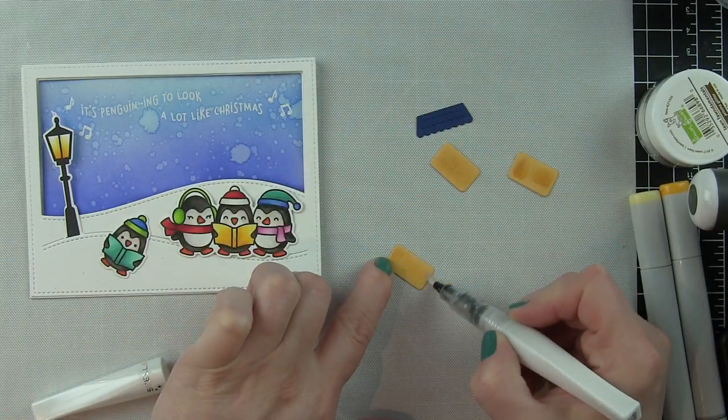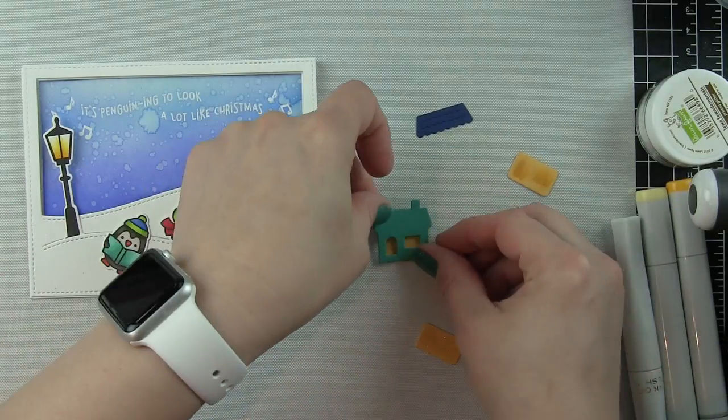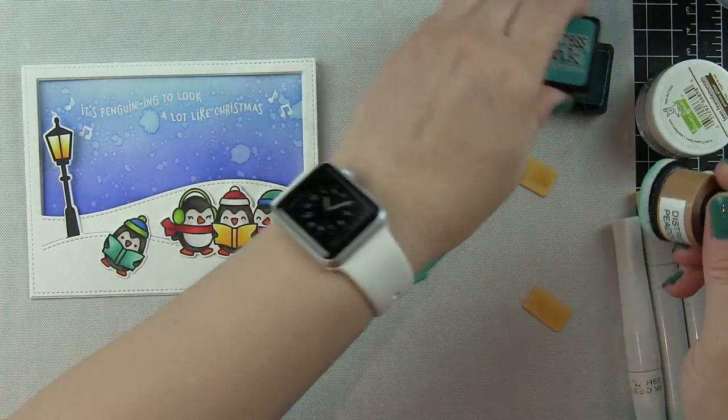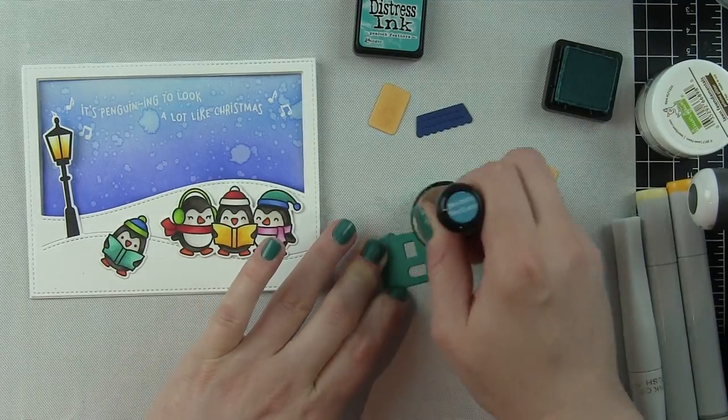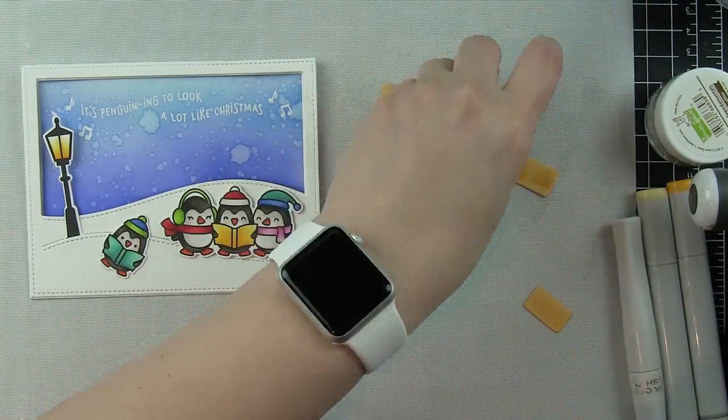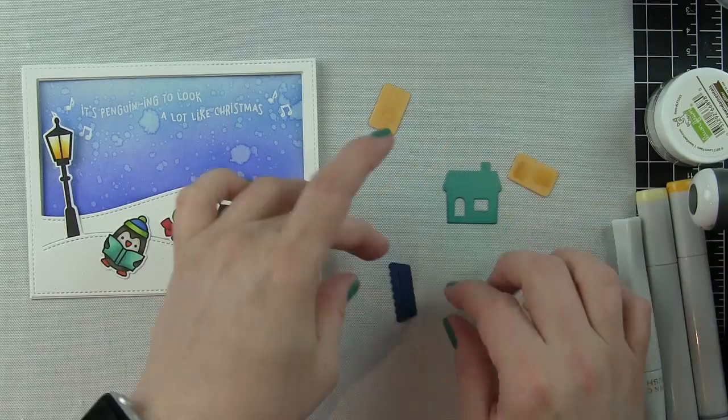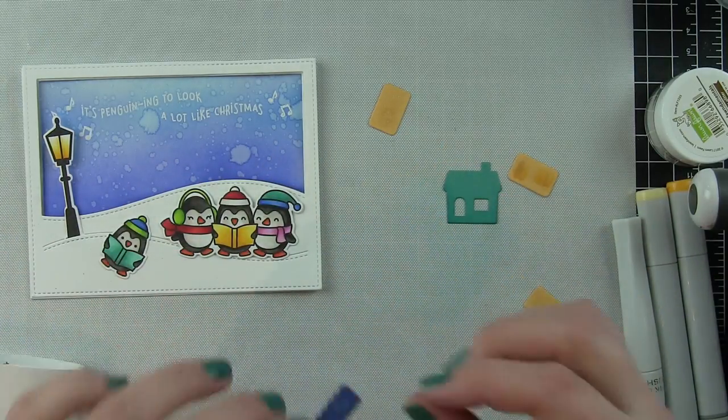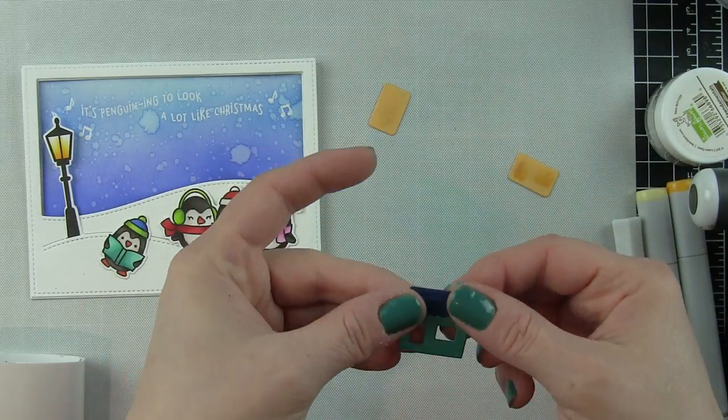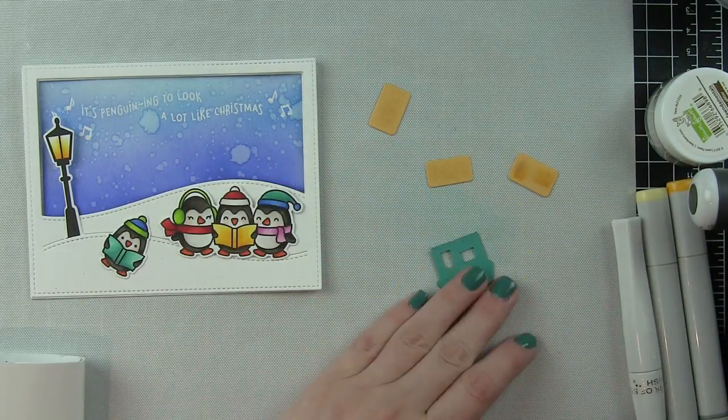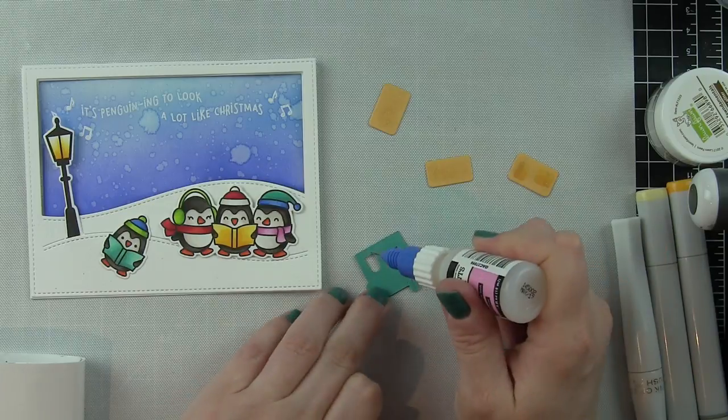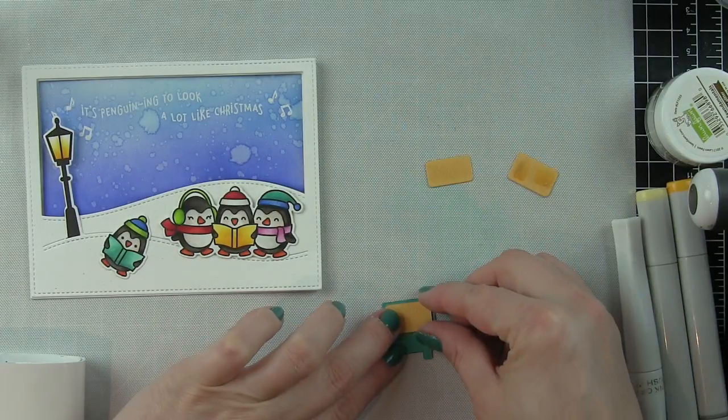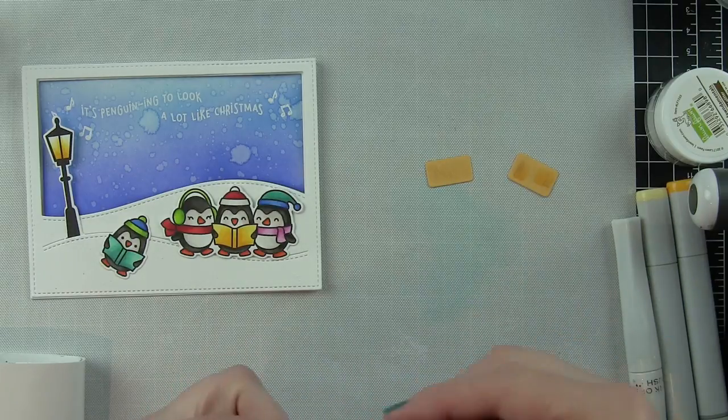I've got all of my components now and I am going to add some Wink of Stella Clear Glitter Brush Pen to those yellow rectangles that go behind the die cut houses. That way, it makes the windows look kind of glittery. I like to do it before I put the house together. That way, in case I get messy with the glitter brush pen, I don't get any glitter on the house and it stays just in the window. I've done it both ways and I really prefer when I remember to do it before I assemble the house.